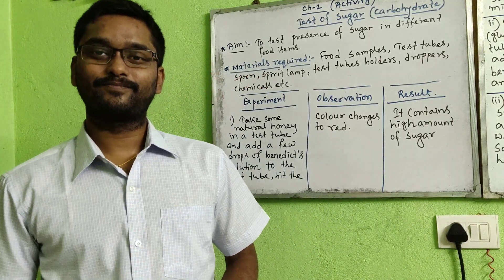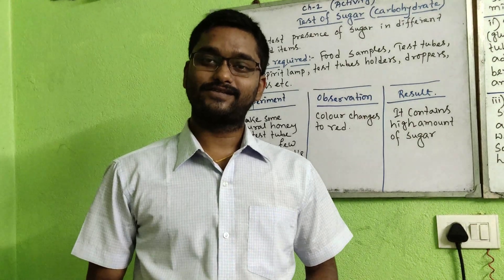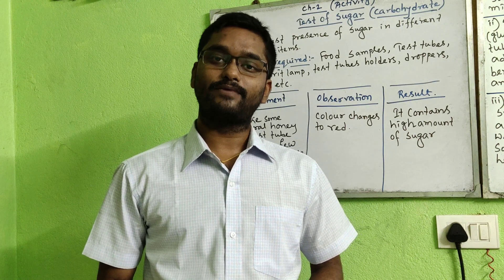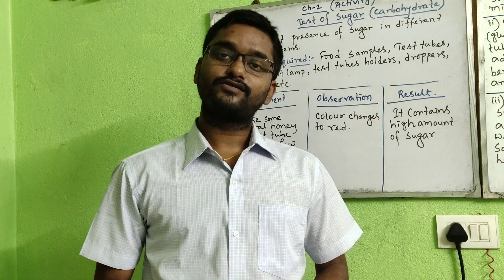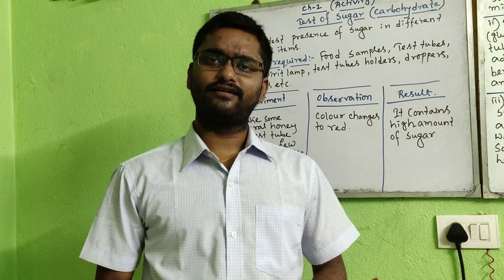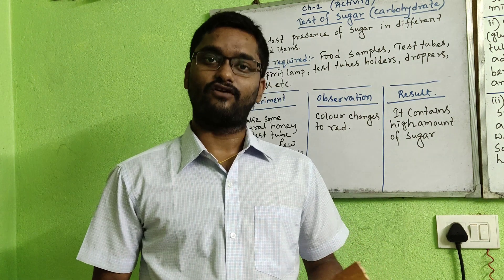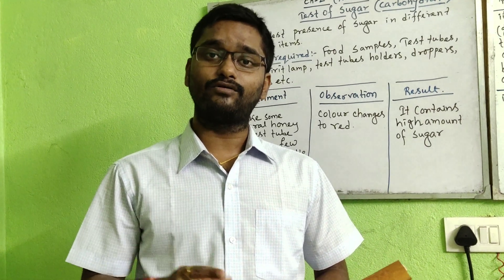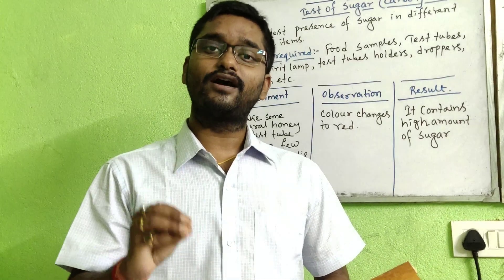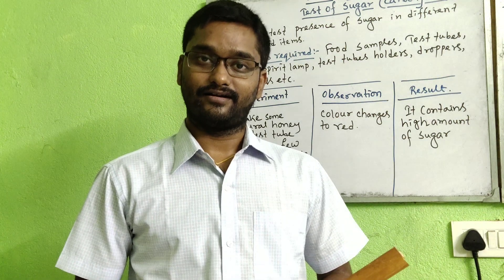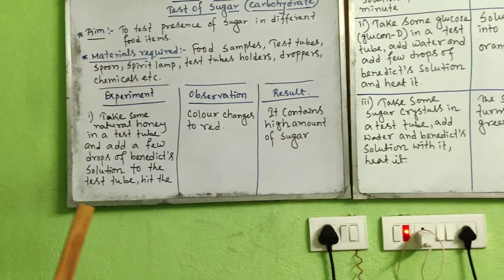Hello, good evening students. Last day in chapter 2 we saw the activity 'taste of starch,' which is one form of carbohydrate. Today we will also learn about one more type of activity: taste of sugar, which is another form of carbohydrate. Different types of forms exist for carbohydrate — starch is one form and sugar is another form. Today we will learn how we can taste the sugar.